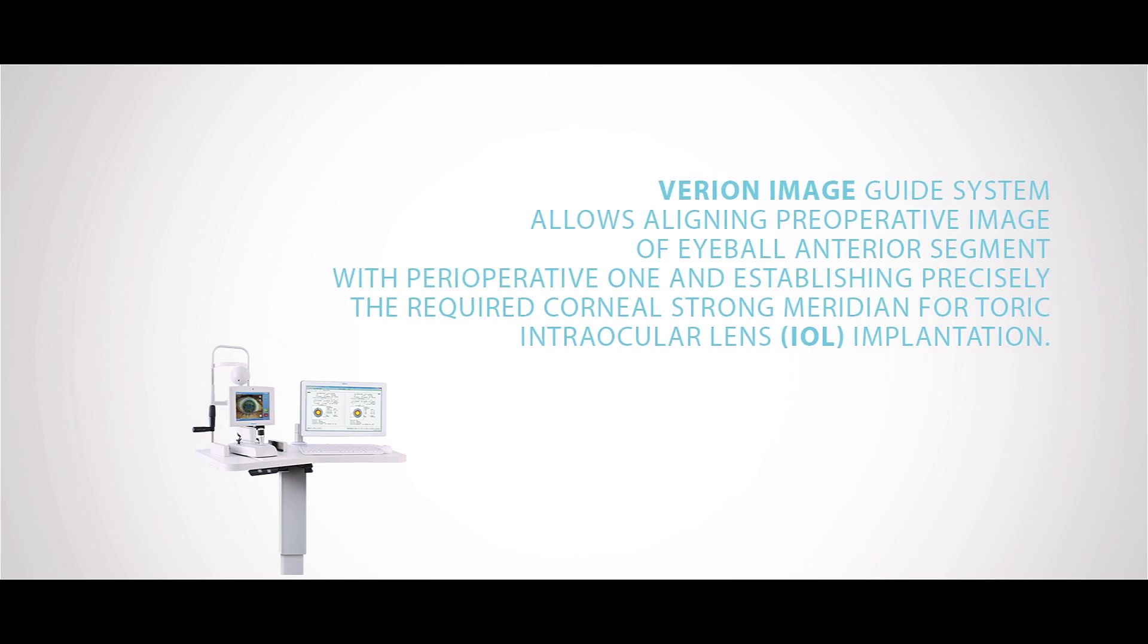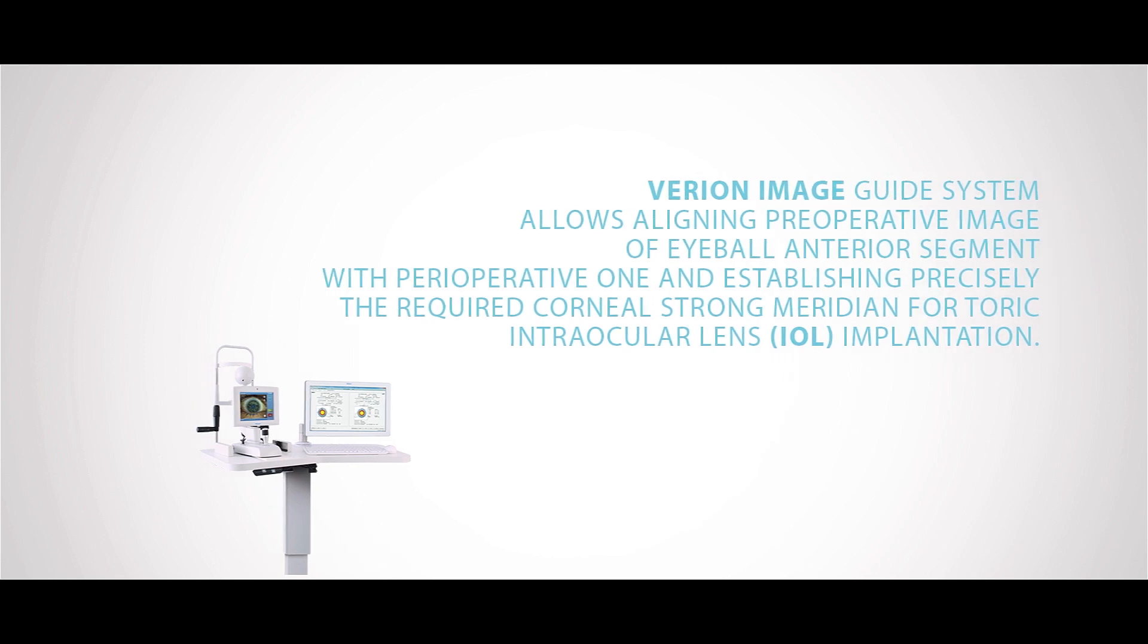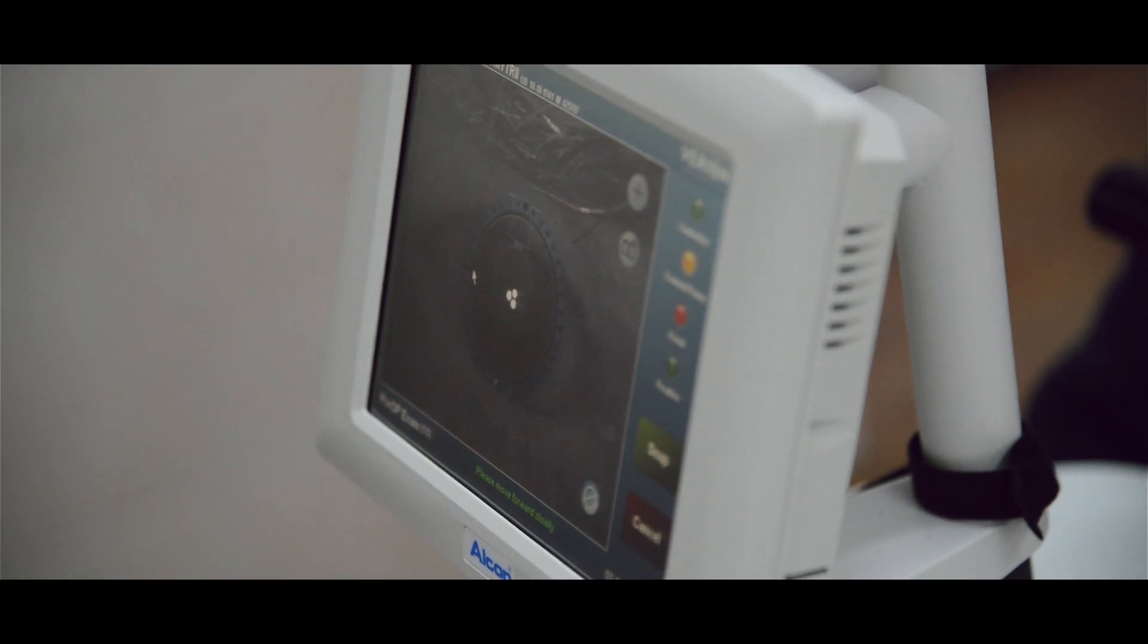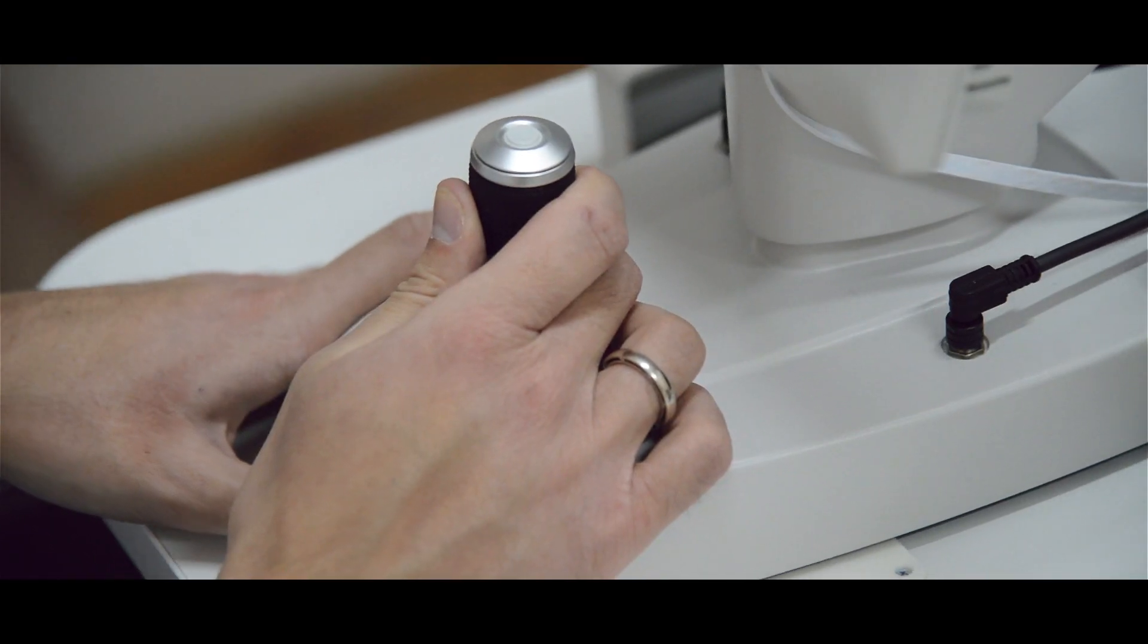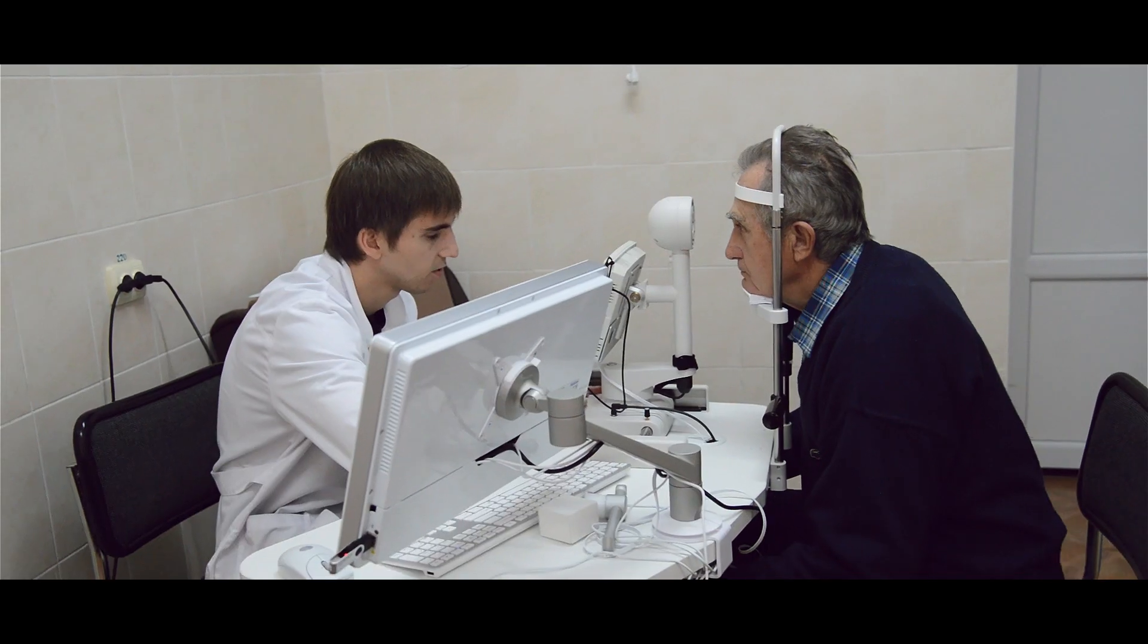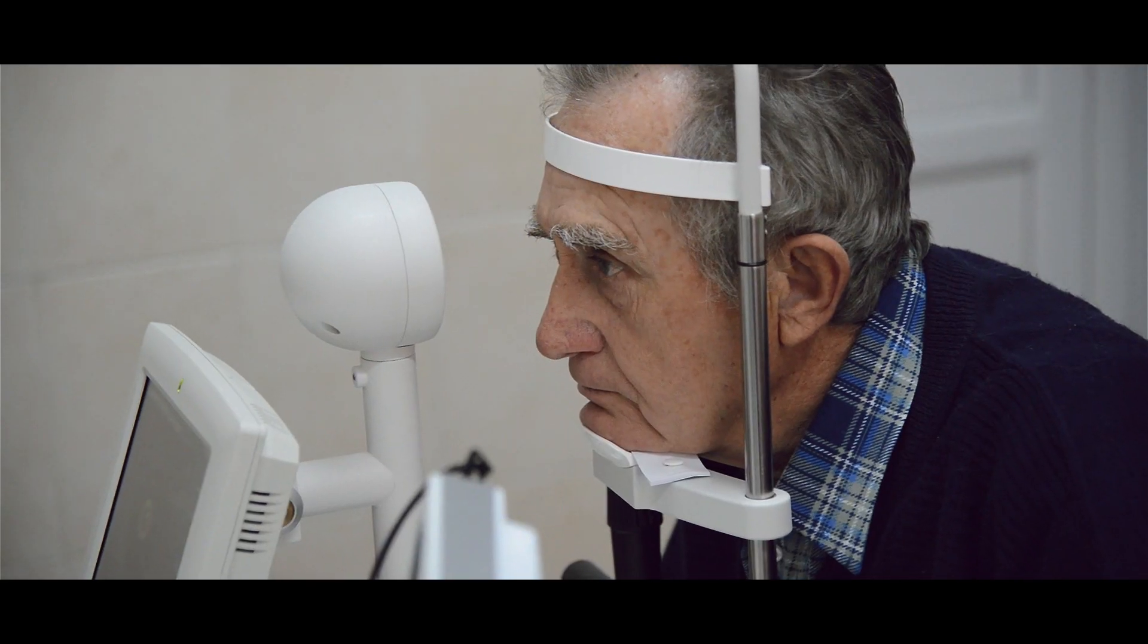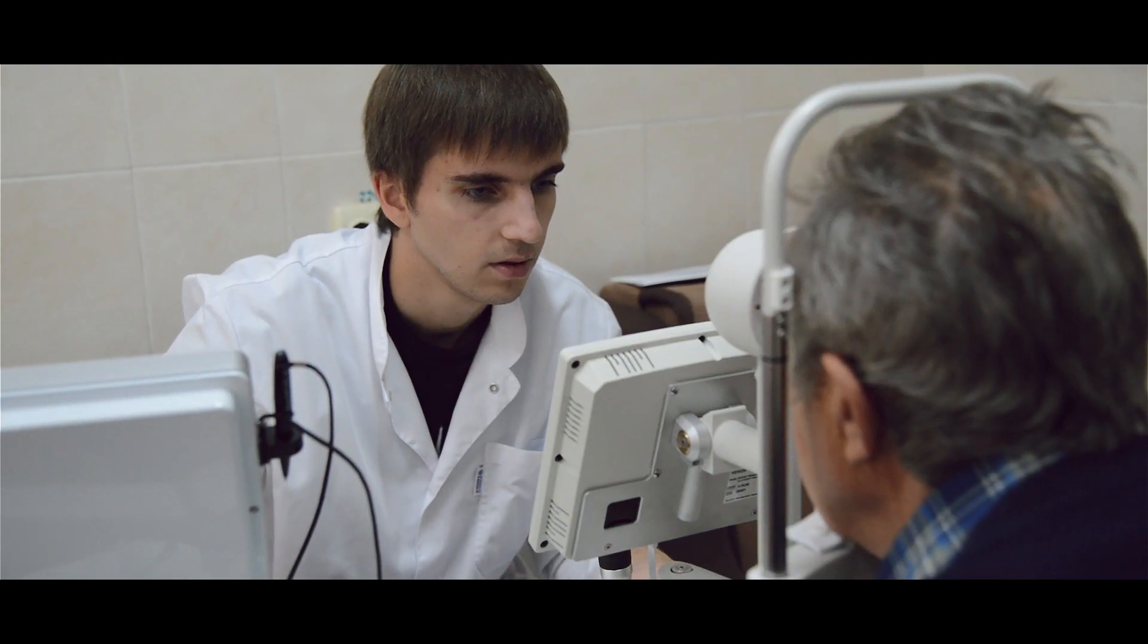Variant image guidance system allows aligning the operative image of the eyeball's anterior segment with the perioperative one and establish precisely the required corneal steep meridian for the toric intraocular lens IOL implantation.